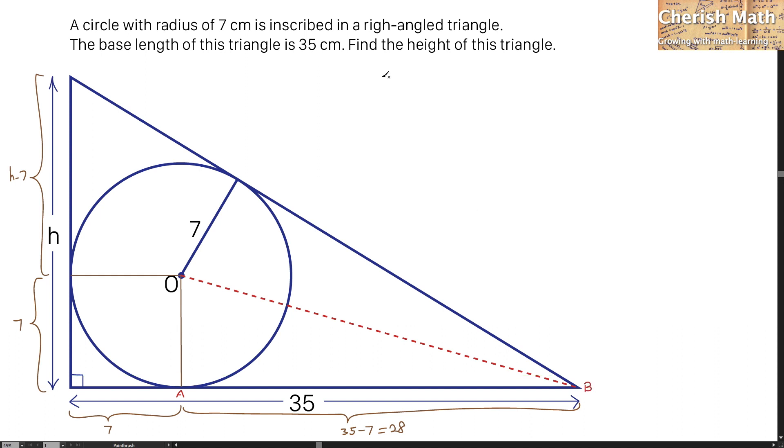By referring to the triangle OAB, I can work out the angle theta here by using trigonometry. Now I'm going to use tangent theta that will be equal to 7 as the radius divided by the length here that I got as 28. So the value of theta here produces 14.04 degrees.